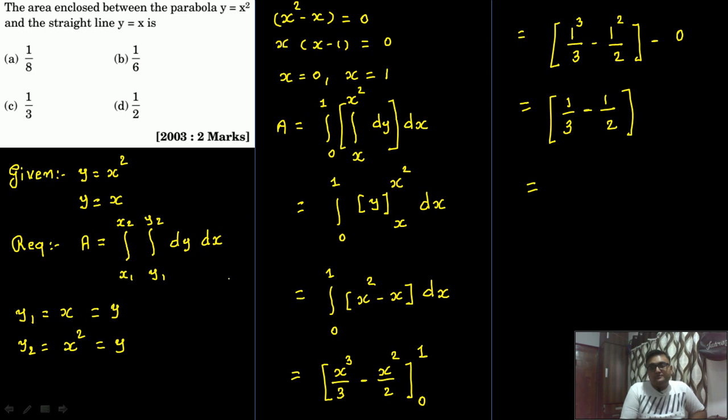So it is equal to - 2 will go here, 3 will come here - so 2 minus 3 divided by 6. We get the answer minus 1 by 6.